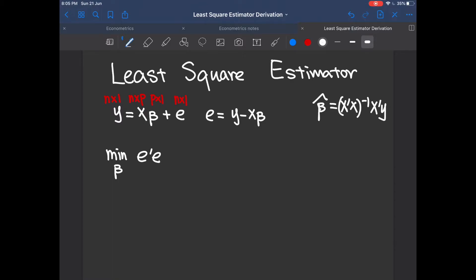So we can also write e transpose e in terms of y minus x beta transpose multiply y minus x beta.